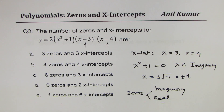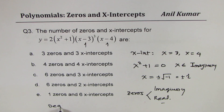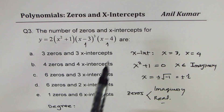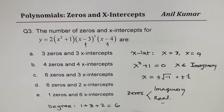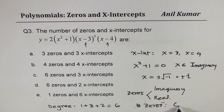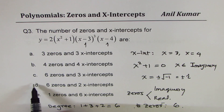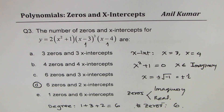X-intercepts are only real, while zeros could be real or imaginary — this example clearly shows it. The degree of this polynomial is 1 + 3 + 2 = 6, therefore the number of zeros is six. So in this case we have two x-intercepts and six zeros. I hope with this you understand the concept of zeros and x-intercepts. Feel free to write your comments and share your views. Thanks for watching and all the best.